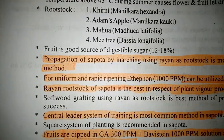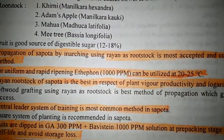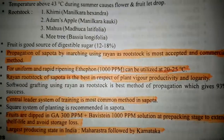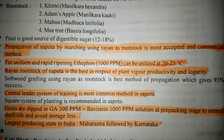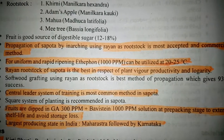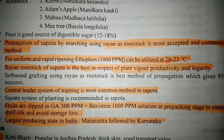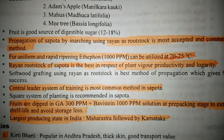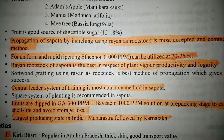Propagation of Sapota by inarching using Rayyan as rootstock is the most accepted and commercial method. For uniform and rapid ripening, Ethephon 1000 ppm can be utilized at 22-25 degrees centigrade. Rayyan rootstock of Sapota is the best in respect of plant vigor, productivity and locality.